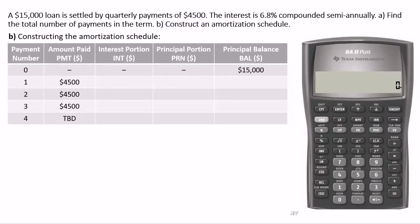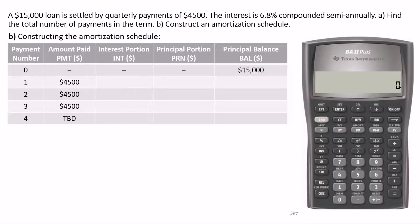The amortization worksheet is the secondary function of the PV button, and it uses the TVM values we've already calculated to compute an amortization schedule. The first three payments are full payments of $4,500, and the last payment will be a partial payment. Before any payment is made, the principal balance is $15,000, which is the original amount borrowed.